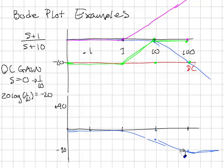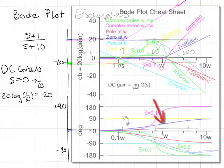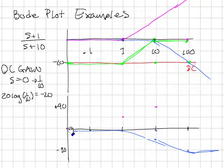Now I need to do the phase curve for the zero. The zero has a total phase shift of 90 degrees over two decades. It's centered at the zero location, which is 1. So the curve looks something like this.